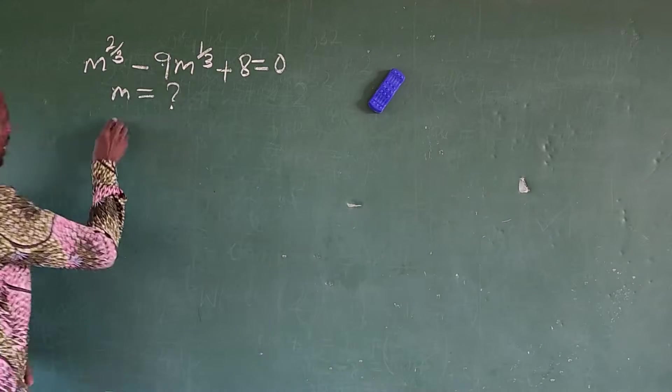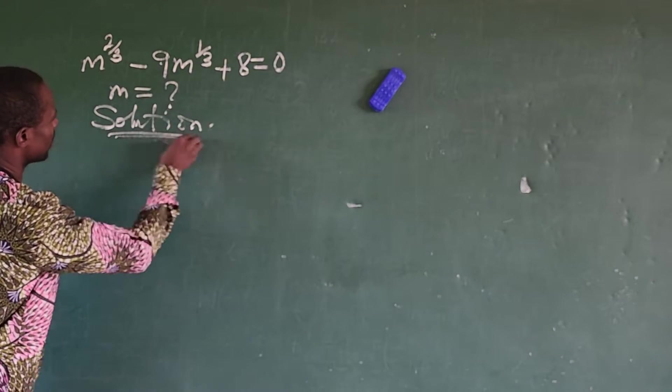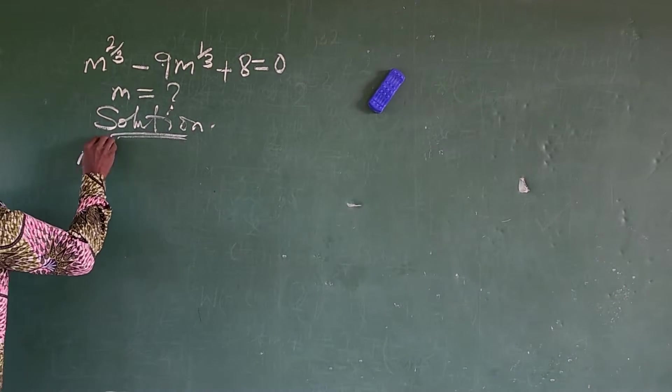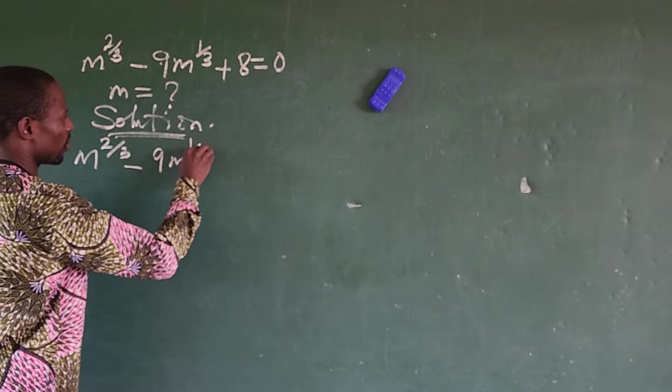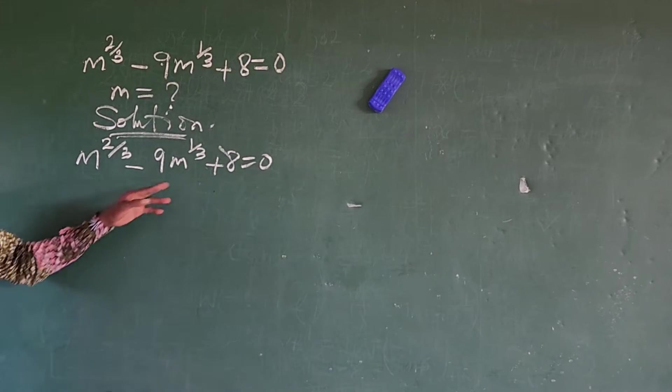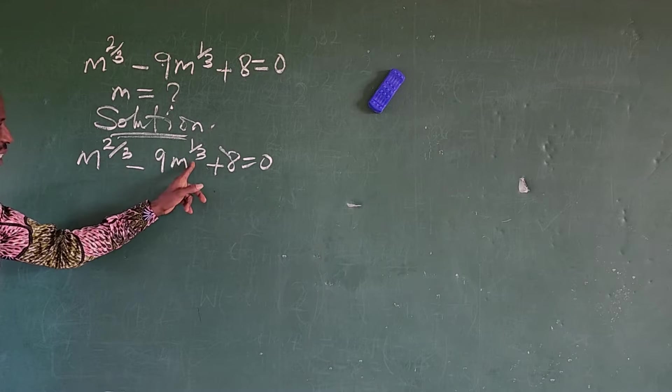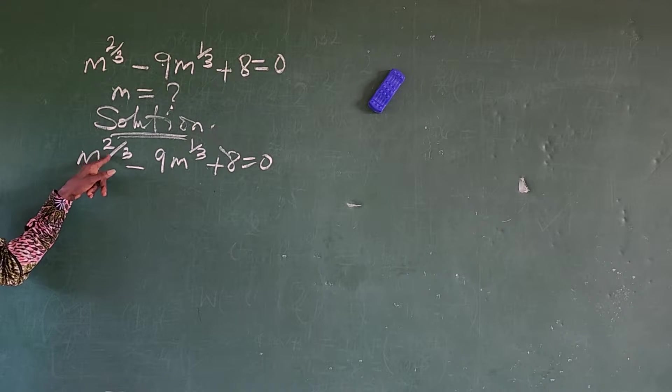So we put down our question solution first. So the question is m to the power of 2 over 3 minus 9m to the power of 1 over 3 plus 8 equals 0. Now if you look at this, this is a form of a radical.